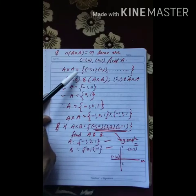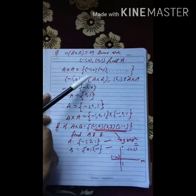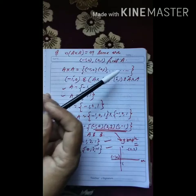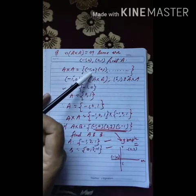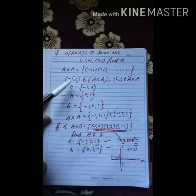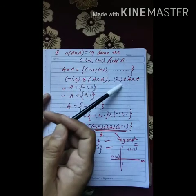Now, A x A having elements (-1, 0) and (0, 1). Similarly, there are some more. It means (-1, 0) will belong to A x A. And (0, 1) also belongs to A x A.